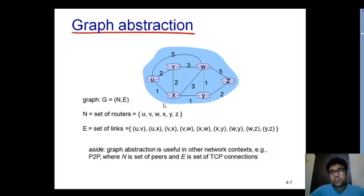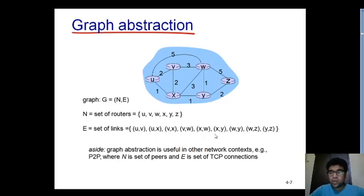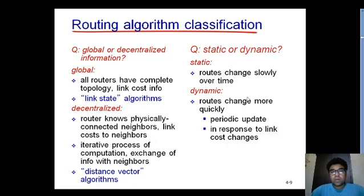Here is a simple network with six routers connected with links and link costs. You can relate this network to a graph — you will find N number of nodes and E number of links connecting the routers together. The set of links includes uv, ux, vx, vw, and so on. You just need to consider this network as a graph and then you can solve routing problems.